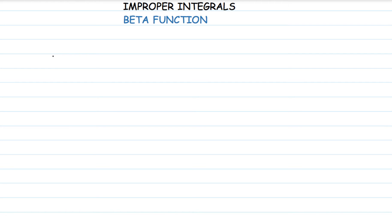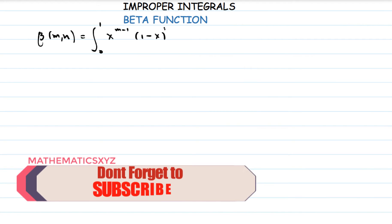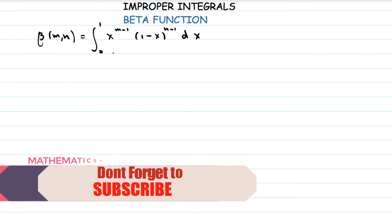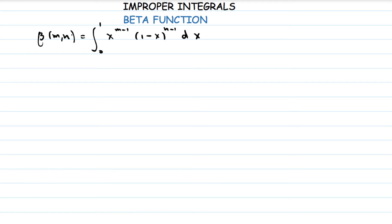Welcome. In this video we're going to give continuation to the study of the beta function. In a previous video we have seen that the beta function, beta of m and n, is defined as the integration from 0 to 1 of x raised to m minus 1 into 1 minus x raised to n minus 1, dx. We have seen some properties and also the relationship between the beta function and the gamma function. In this video we're going to be solving some examples.